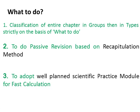To summarize, I will divide the entire issue under three headlines. The first one is classifying every math chapter into groups and then into types, based on what to do. The second one is the recapitulation method — this scientific, specific passive revision process helps a weak student visualize the entire content they have learned. The third one is fast calculation methodology.